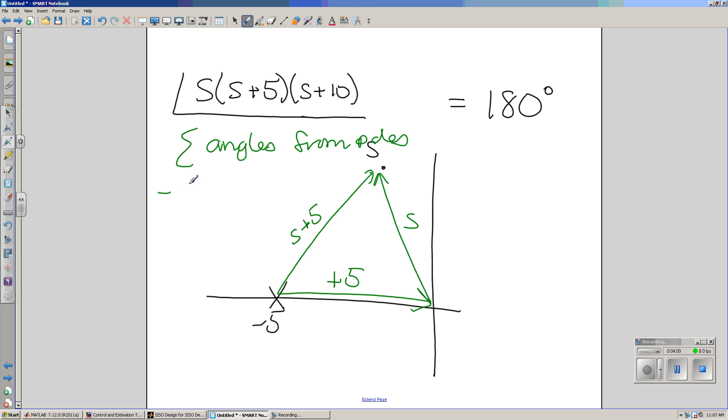minus the sum of the angles from zeros, must add to 180 degrees. That, in essence, is a root-locus plot. Angles have to add up to 180.